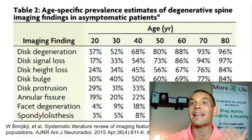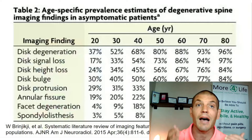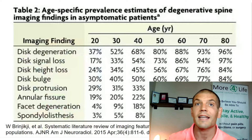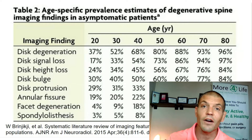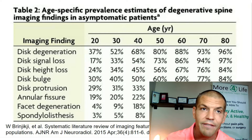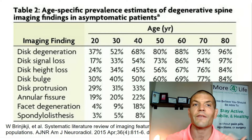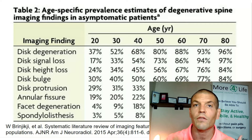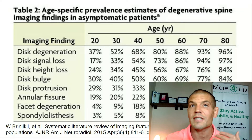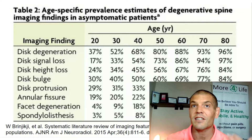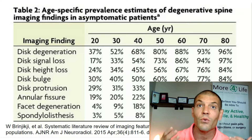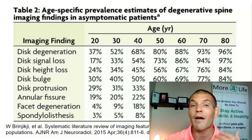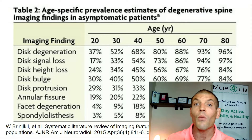To give you an idea of how common these things are: disc degeneration, as you can see from this table from a 2015 study in the American Journal of Neuroradiology, starts very, very early in life. Disc degeneration begins even in your 20s, with about 37% of people without pain having these findings.